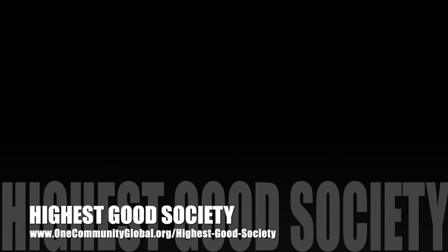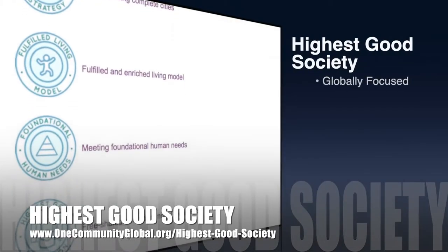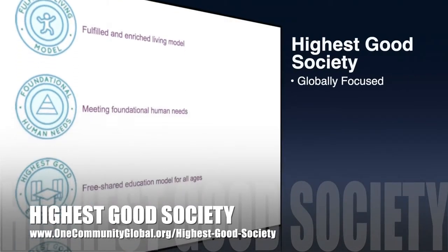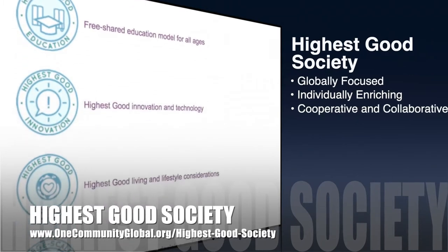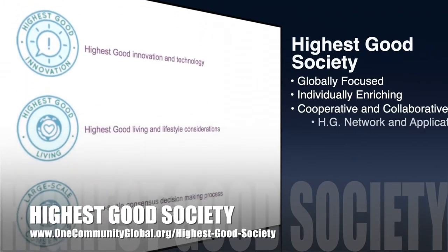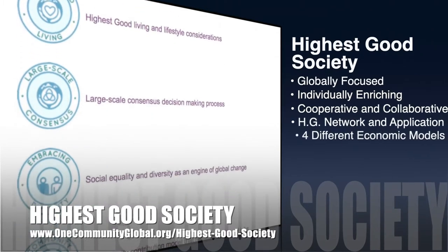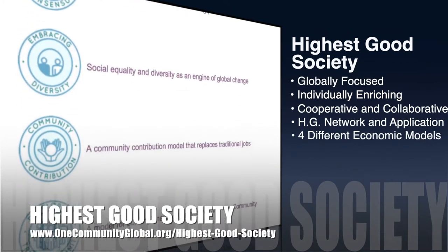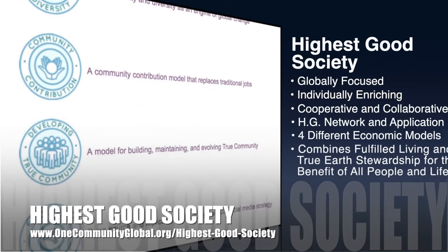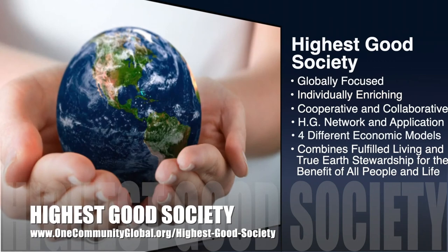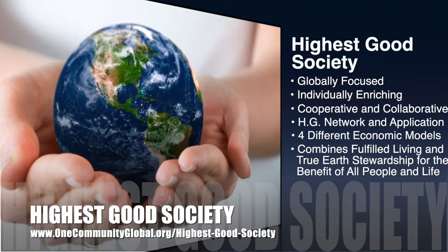The One Community approach to highest good society is globally focused, individually enriching, cooperative and collaborative, includes a highest good network and application, four different economic models, and combines fulfilled living and true earth stewardship for the benefit of all people and all life on this planet.